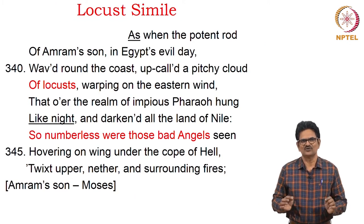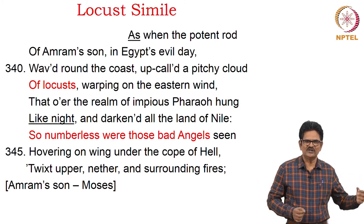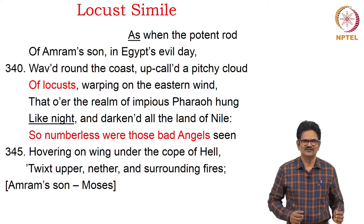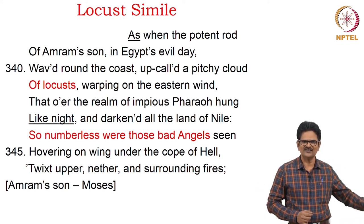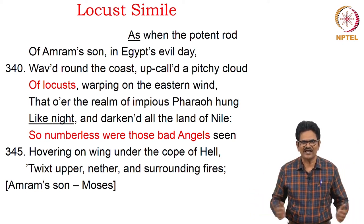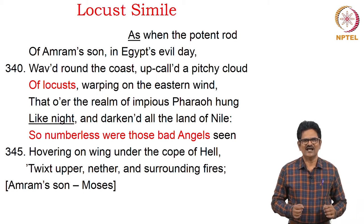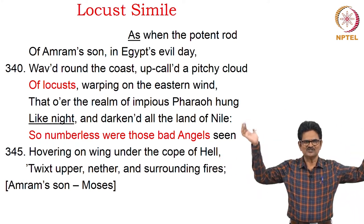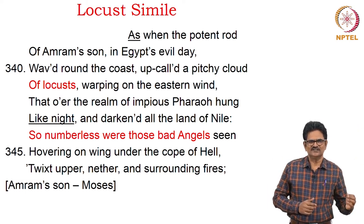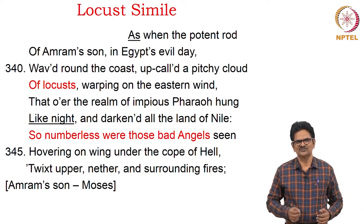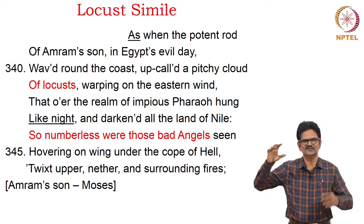We have a simile in the form of locusts: 'As when the potent rod of Amram's son in Egypt's evil day waved round the coast, up called a pitchy cloud of locusts, warping on the eastern wind, that over the realm of impious Pharaoh hung like night, and darkened all the land of Nile — so numberless were those bad angels seen, hovering on wing under the cope of hell.' All these angels were coming together like locusts in the sky, like a dark cloud in the night. This is referred to through Amram's son, that is Moses, when Moses came to Egypt.